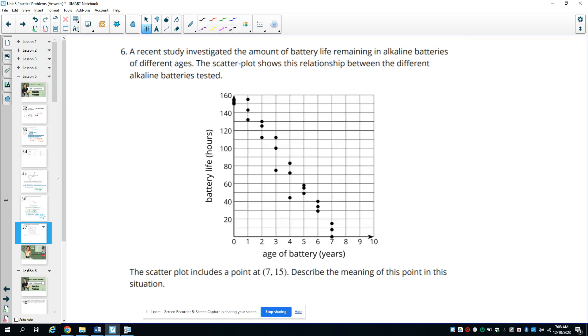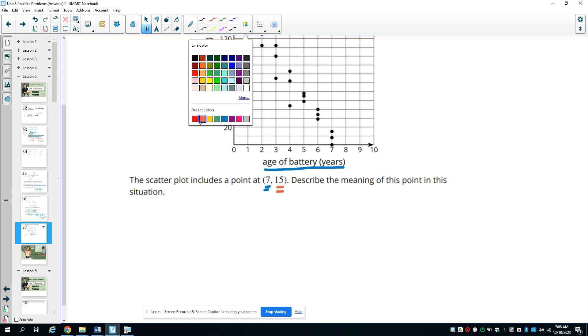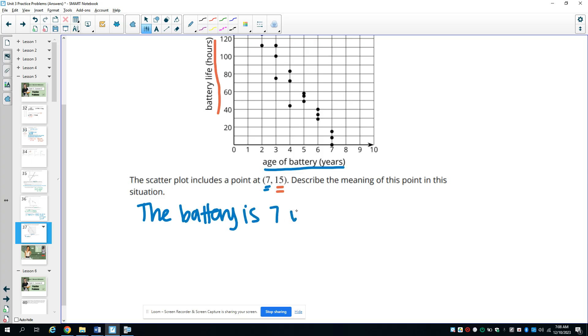Number six, a recent study investigated the amount of battery life remaining in alkaline batteries of different ages. The scatter plot shows the relationship between the different alkaline batteries tested. The scatter plot includes the point (7, 15), describe its meaning. So the x value is the age of the battery in years. And then the y value is the battery life in hours. So this 7 represents the battery is 7 years old. And the y value tells the battery life in hours. So the battery is 7 years old and its battery life is 15 hours.